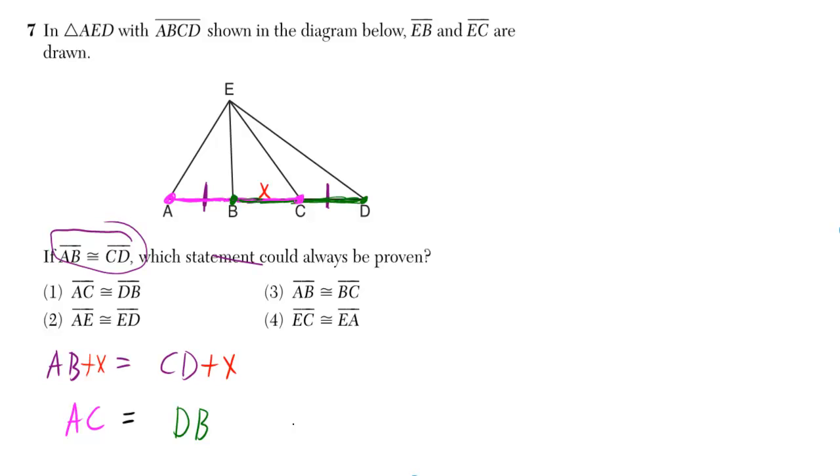I don't know why they put this kind of stuff. EB and EC are drawn? Duh!